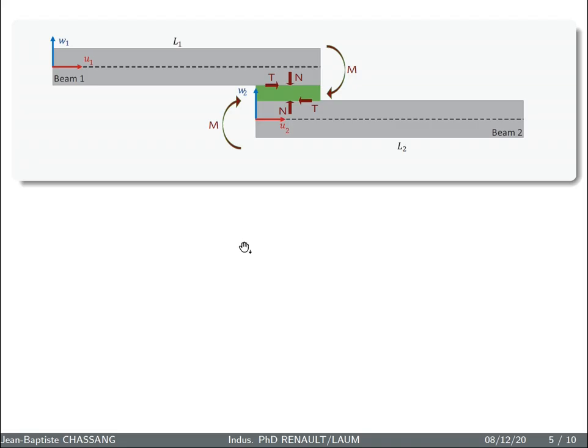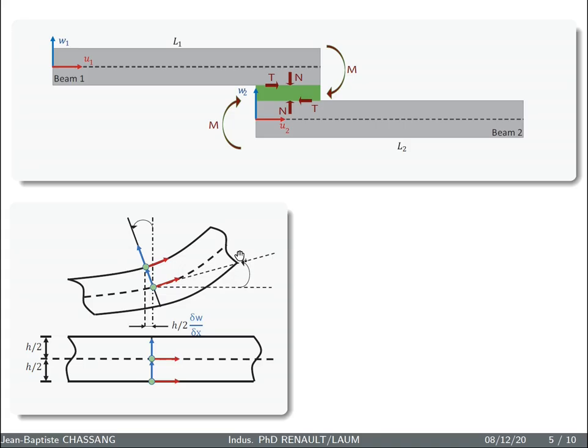As we said, the first origin of the motion conversion comes from the difference of the neutral line between the two beams due to the non-face-to-face configuration. The second origin comes from the thickness of the beam.